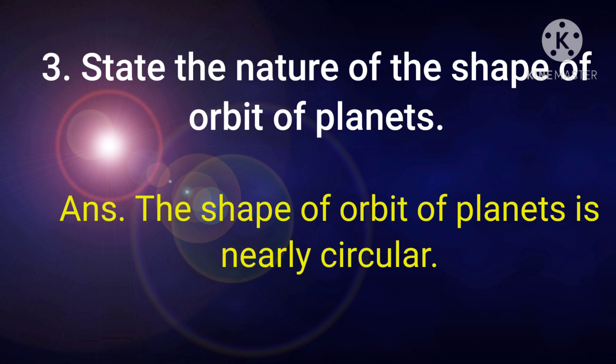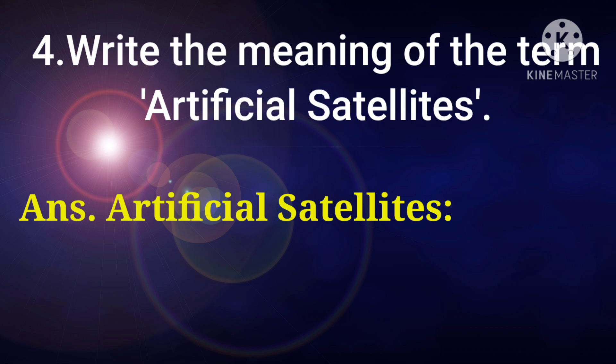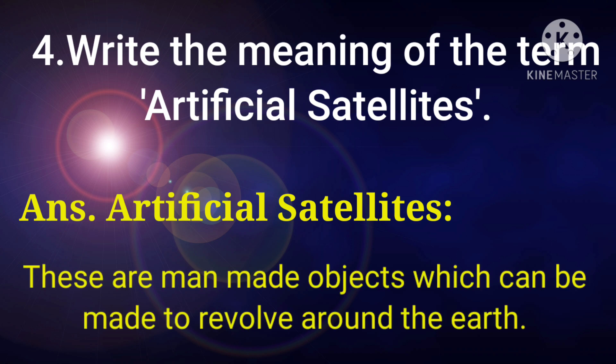Last question is, write the meaning of the term artificial satellites. Answer is, artificial satellites, these are man-made objects which can be made to revolve around the Earth.